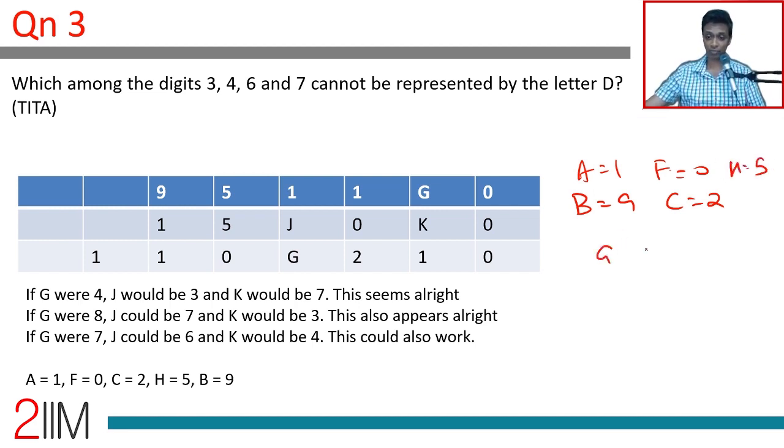G, K, J is saying this could be 4, 7, 3. Or it could be 8, 3, 7, or 4, 3, 4, 6. Wonderful. Which among the digits 3, 4, 6 and 7 cannot be represented by the letter D?